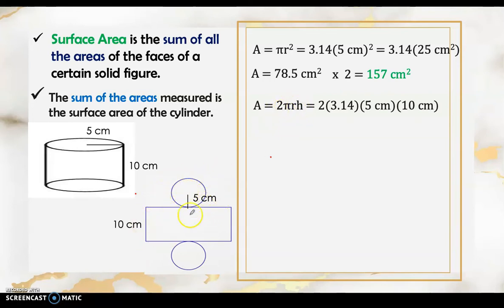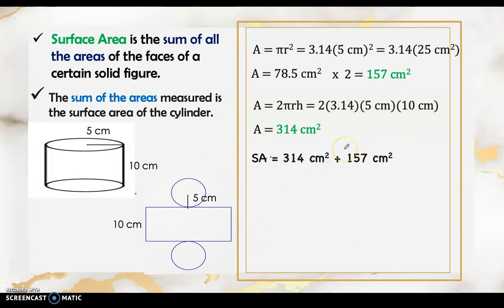We substitute: 2 times 3.14 times the radius of 5 centimeters times the height of 10 centimeters. Simplifying, we get 314 square centimeters for the curved face. Now let's add all the areas: 314 square centimeters for the curved face and 157 square centimeters for the two circles. The surface area of this cylinder is 471 square centimeters.